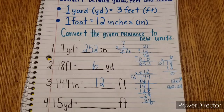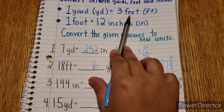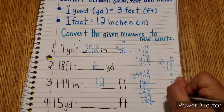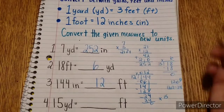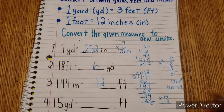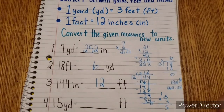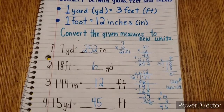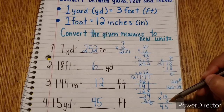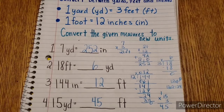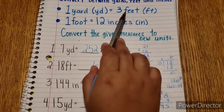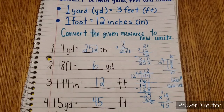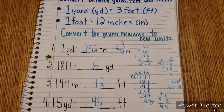Next, we have 15 yards and want to find how many feet that is. Since 1 yard equals 3 feet, we multiply 15 times 3. 5 times 3 is 15, carry the 1; 3 times 1 is 3, plus 1 is 4. So that would be 45 feet. We multiply by 3 because 1 yard equals 3 feet, so to find feet in 15 yards we do 15 times 3.